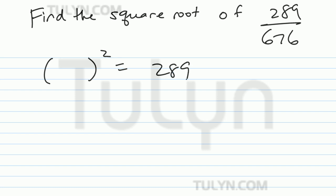Find the square root of 289 divided by 676. So go ahead and find what squared equals 289 and what squared equals 676.